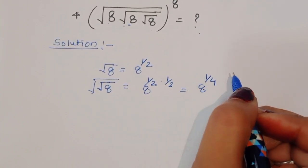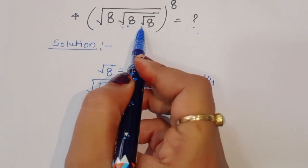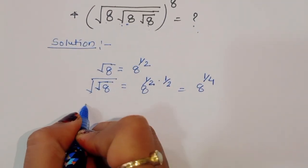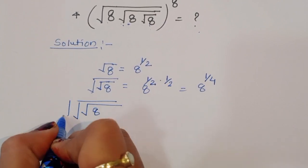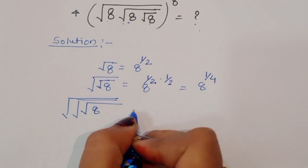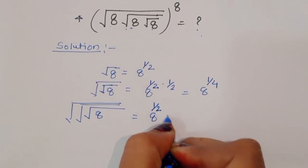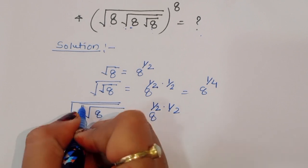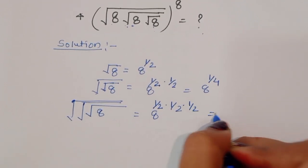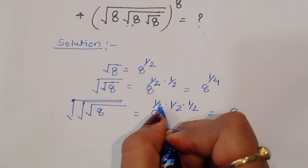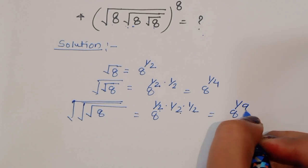In the next term we have three levels of square root — square, square, square — so 3 times square root. That gives us 8 power 1 by 2 times 1 by 2 times 1 by 2, which equals 8 power 1 by 8.